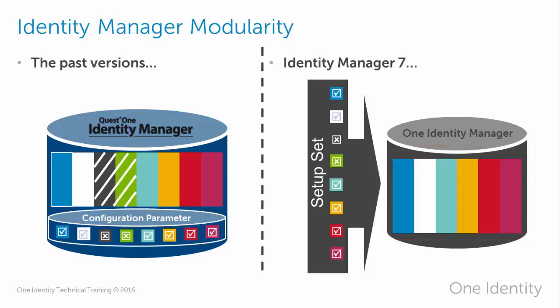There are two reasons for this. The first reason is the easiest to understand. If you install Identity Manager as an Active Directory Edition expert, you are not really interested in all the other database and process structure components that are not part of the Active Directory Edition. From your perspective, that extra stuff only increases complexity. The new modular setup set allows you to decrease complexity and work only with the parts of the installation you need for your business.